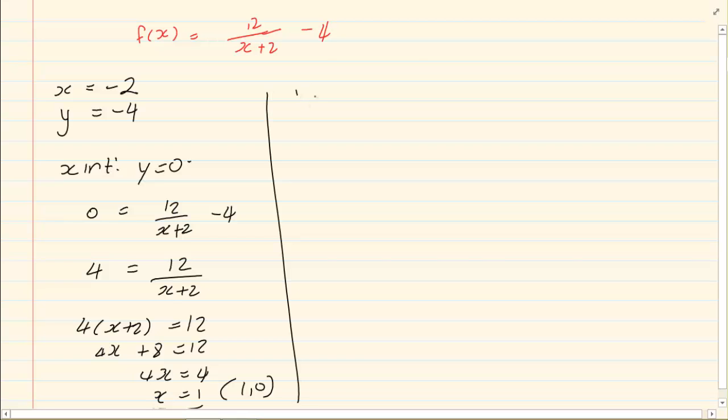Then we have our Y intercept. Y intercept X is equal to 0. So I have Y is equal to 12 over 2 minus 4 which is 6 minus 4. So Y is equal to 2. My coordinates are 0 and 2.